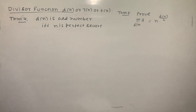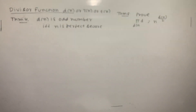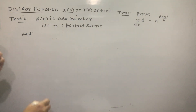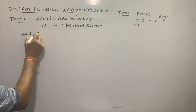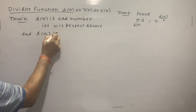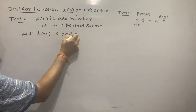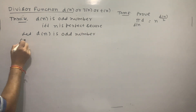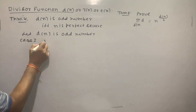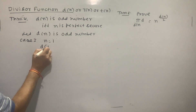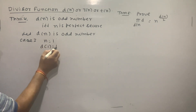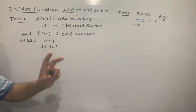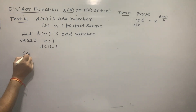Let me prove it. First, let d(n) be an odd number. For Case 1: n equal to 1, d(1) equal to 1, and 1 is a perfect square. So n = 1 is a perfect square.